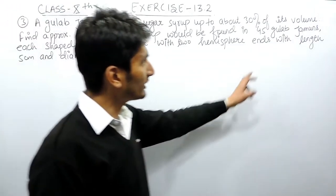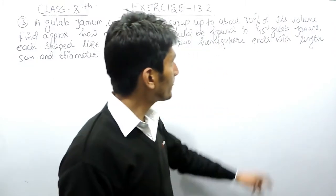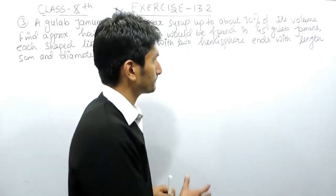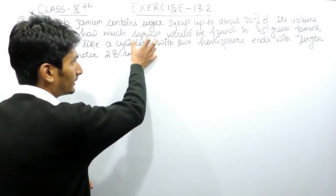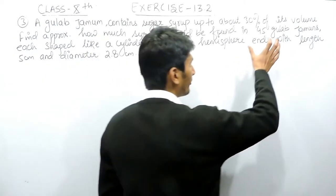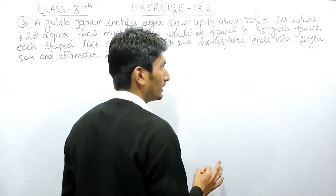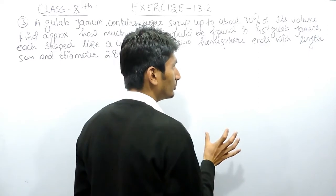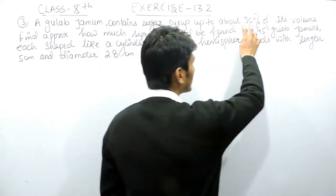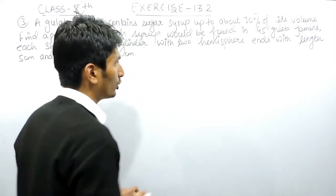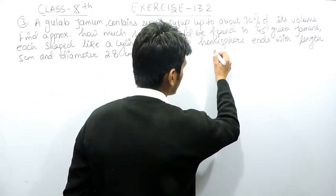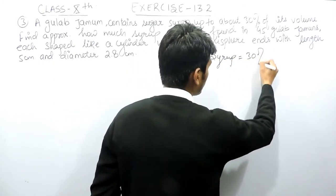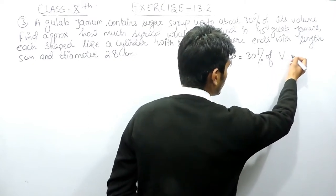In this case, you have to find how much syrup is there in 45 gulab jamuns, where the syrup is 30% of the volume. First of all, you need to find the volume of one gulab jamun. When that is multiplied by 45, that will be the volume of 45 gulab jamuns, and the syrup is 30% of this volume.